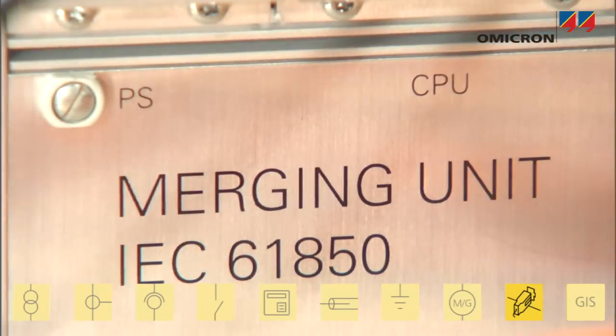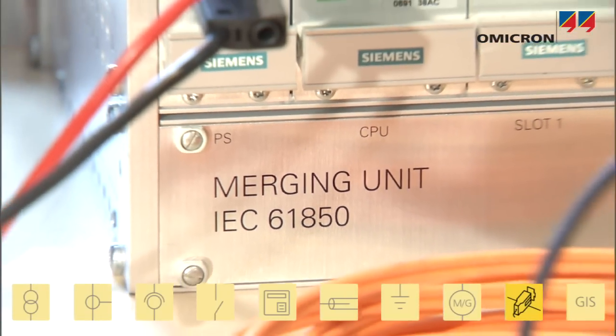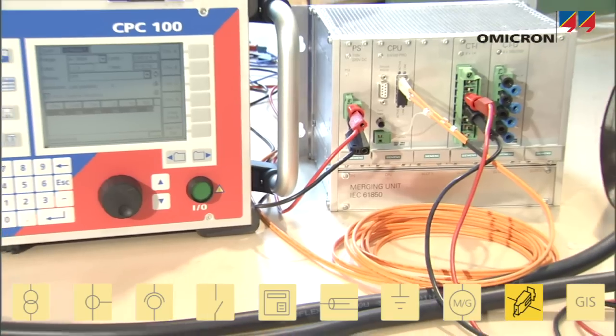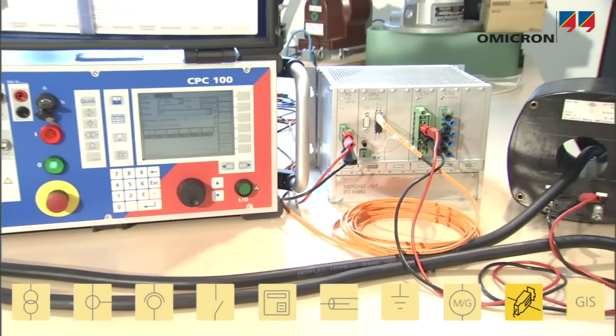The CPC can also test non-conventional sensors and merging units in stations using sampled values according to IEC 61850.